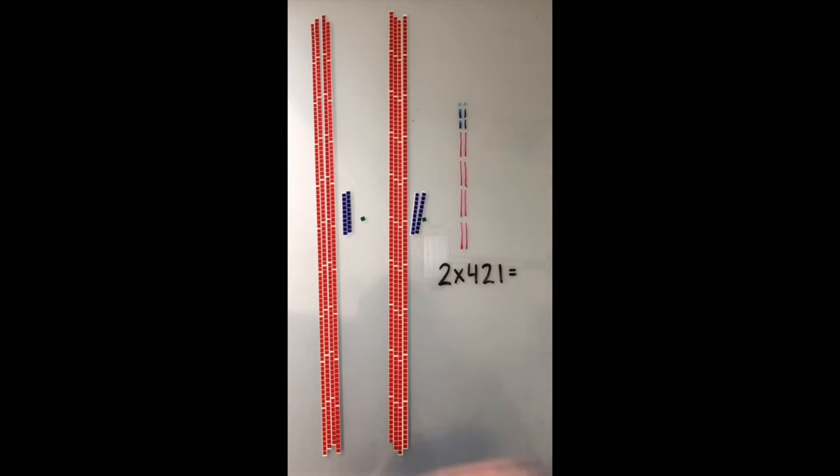From there we can simply count the like kinds. There will be eight hundreds, four tens, and two units.